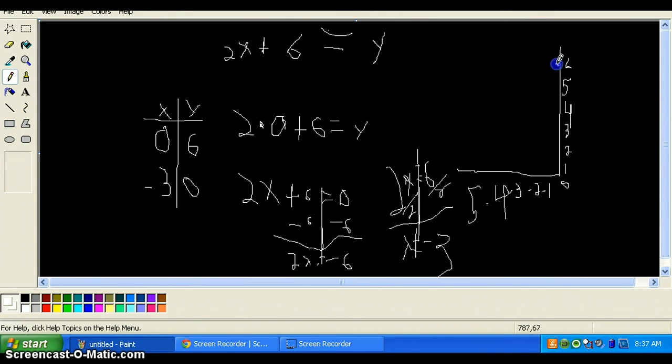You'd mark your point right here. And then you'd do minus 1, minus 2, minus 3. Mark your point right there. And then you connect them. And that's how you graph it.